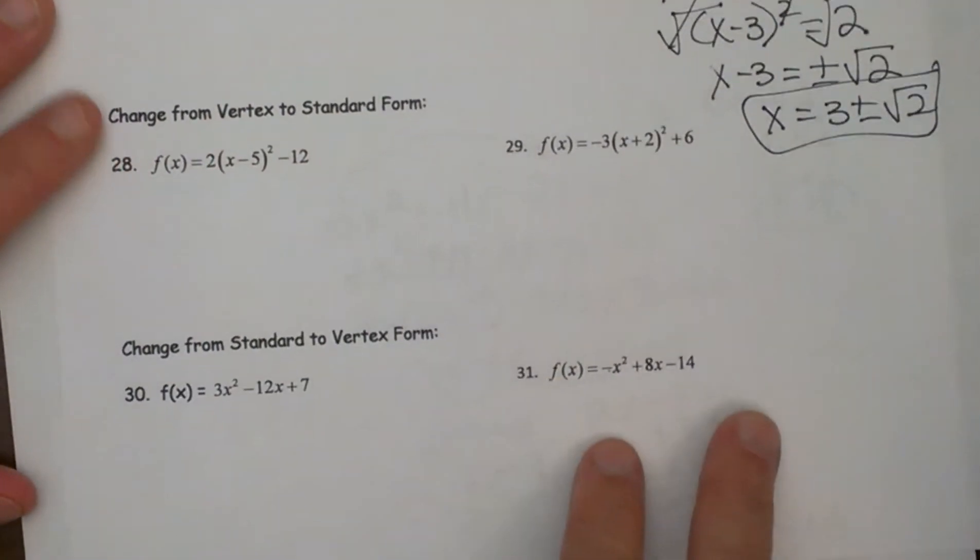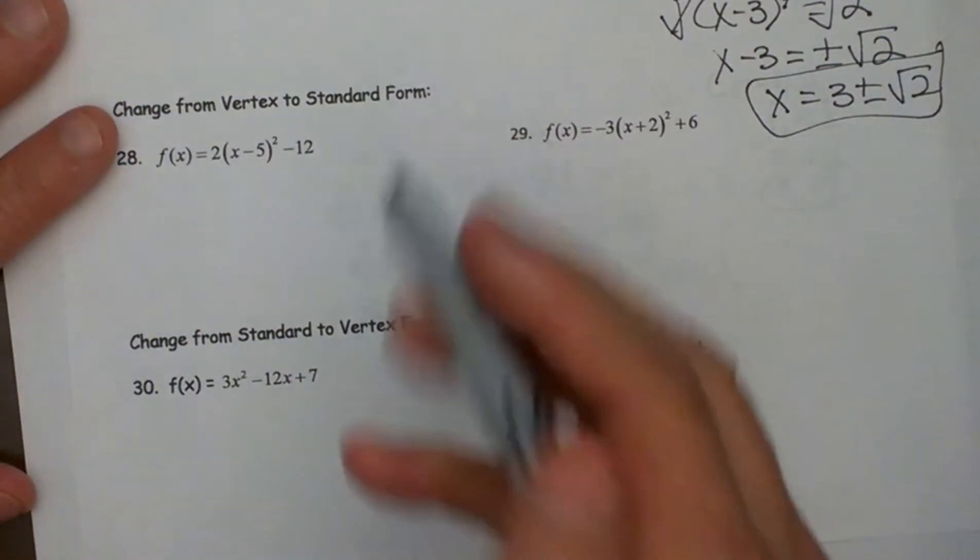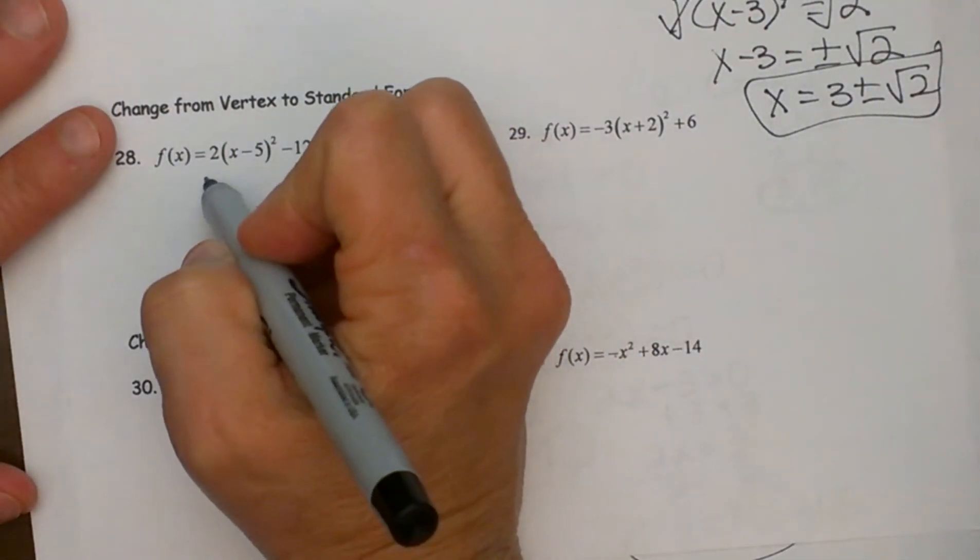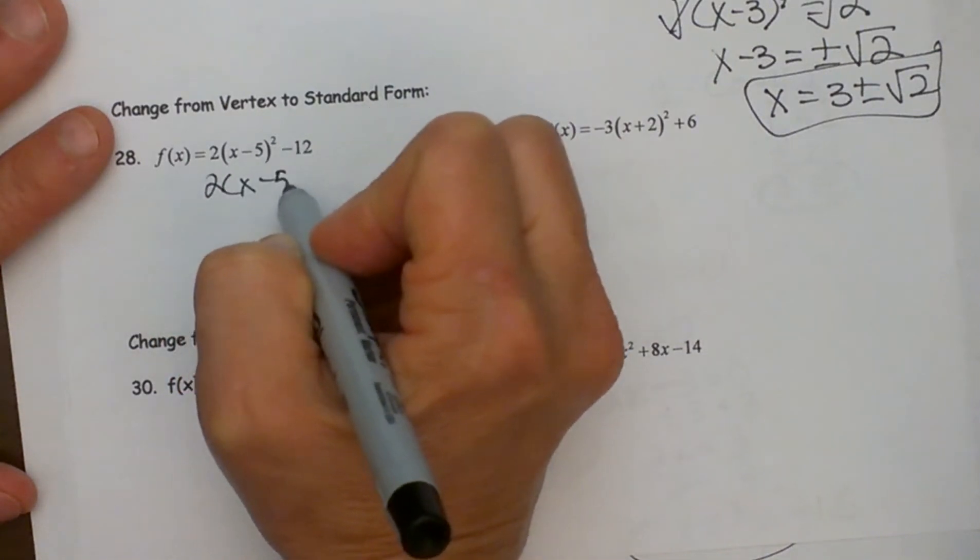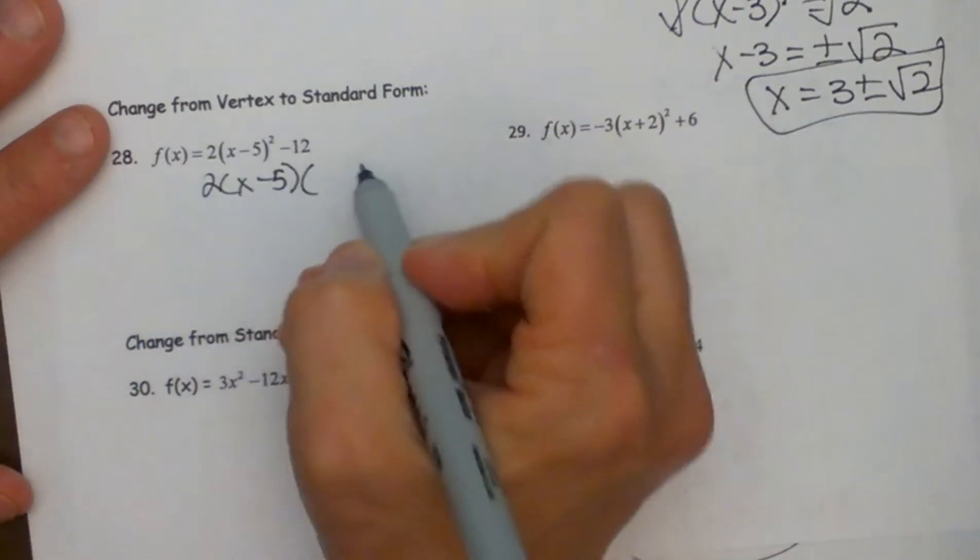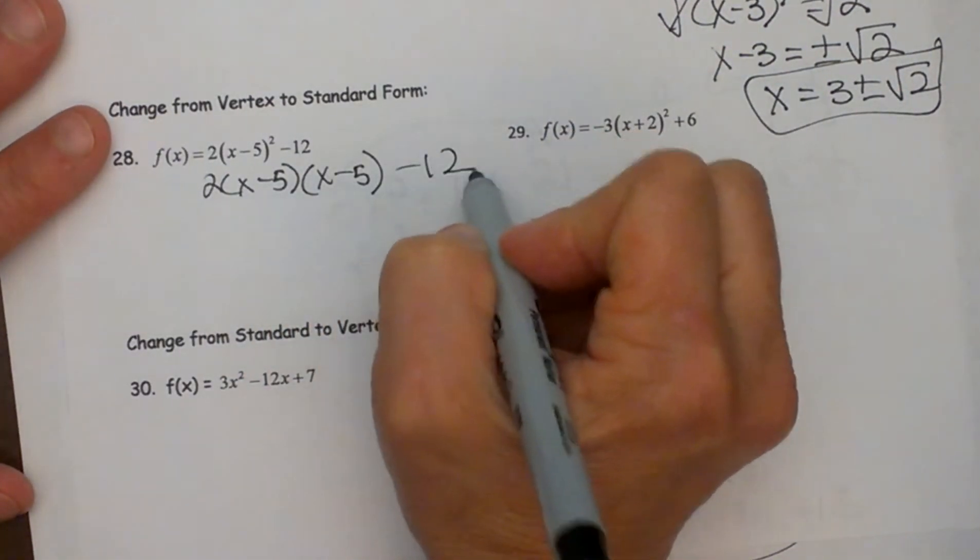So it is in vertex form but to switch it to standard form I have to apply some algebra skills here. So what I am going to do is I have got this perfect square and I am going to write out two of those. So when I see a square I know I have x minus 5 times x minus 5 and then minus 12.